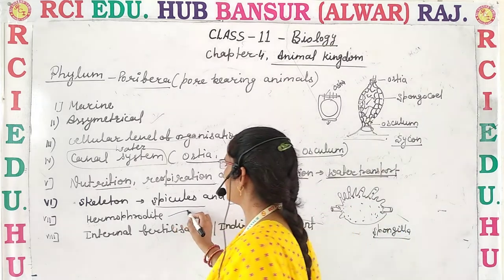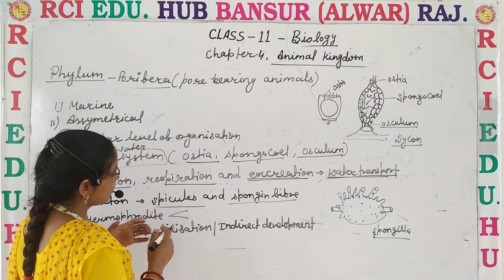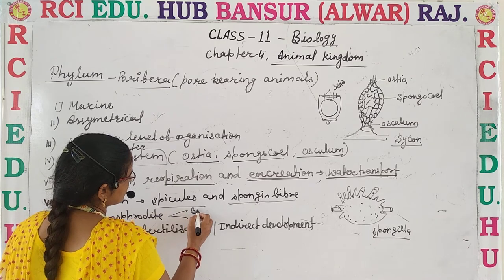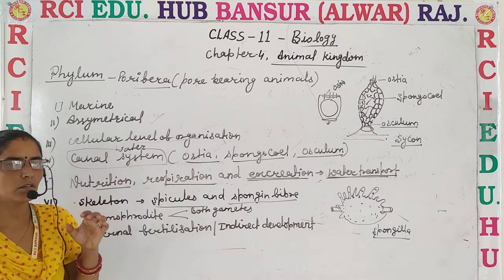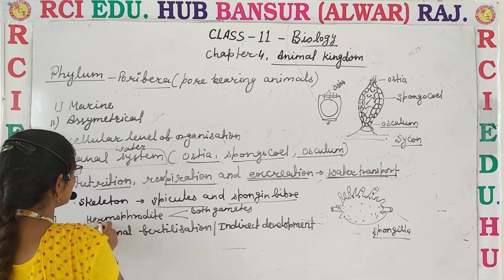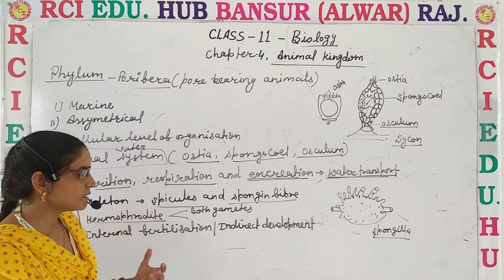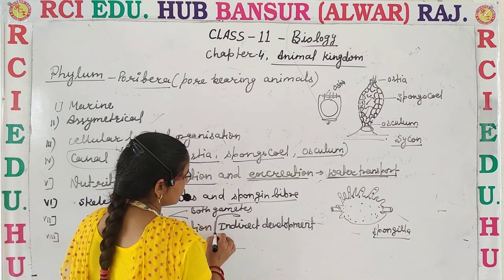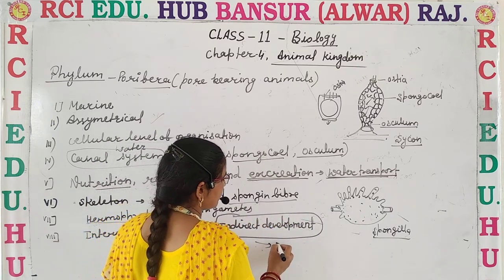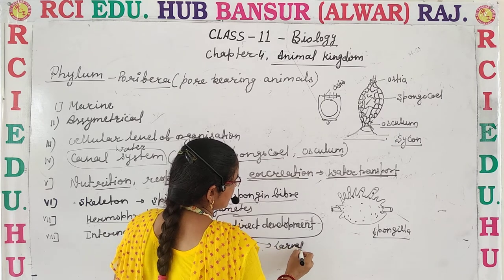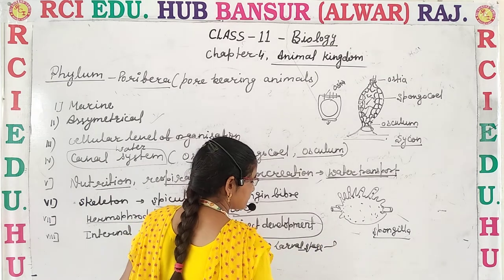They are hermaphrodite in nature, meaning a single individual — whether male or female — produces both gametes. Both gametes are produced by one individual, so these are known as hermaphrodites. Fertilization takes place internally, inside the body, and development is indirect, meaning after fertilization there are larval stages, and it directly develops into a new individual.